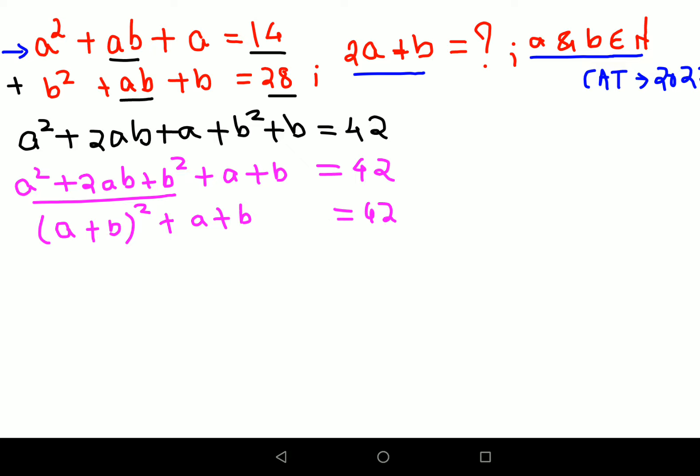Now let's do one thing. Let's take A plus B common. So I am left with A plus B, and since this is taken out I am just left with plus 1, equals to 42.